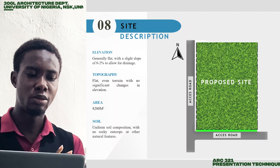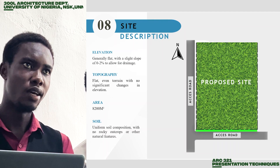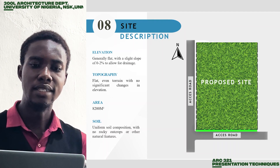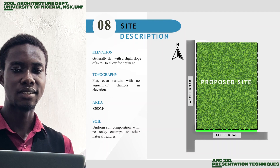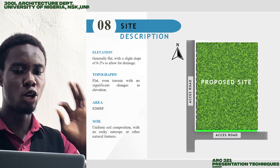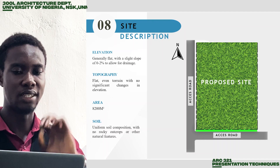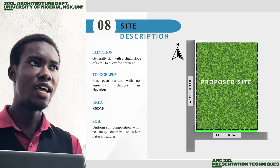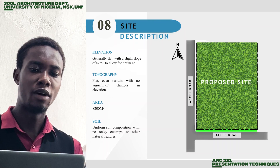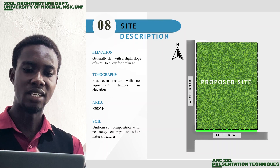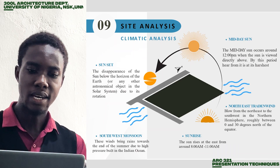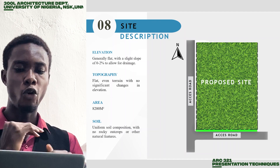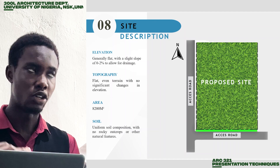The site is located at Udi in Enugu State, and is generally flat with a slight slope of 0 to 2 percent to allow for drainage. The area of the site is about 8,200 square meters. The soil is uniform and there are no rocky outcrops on the site.